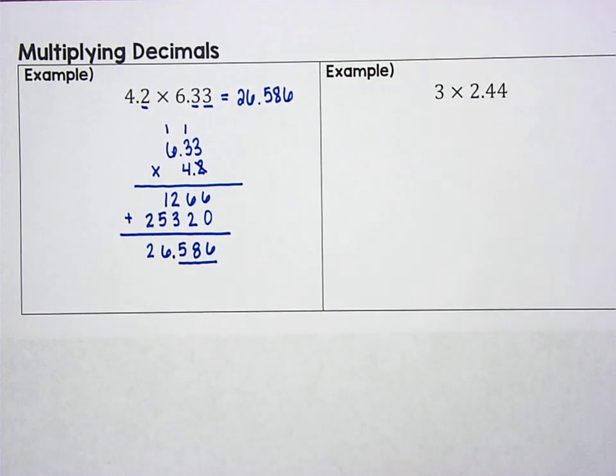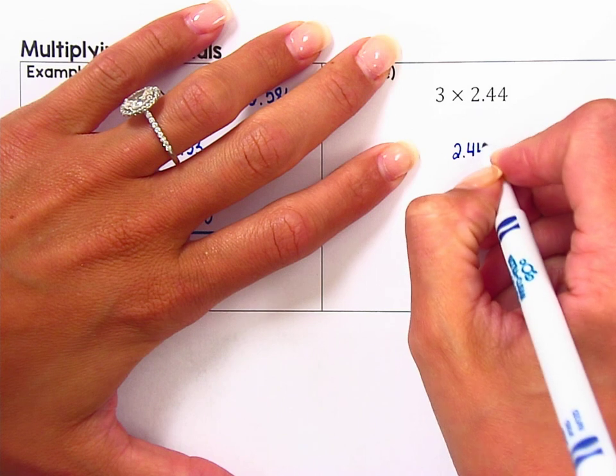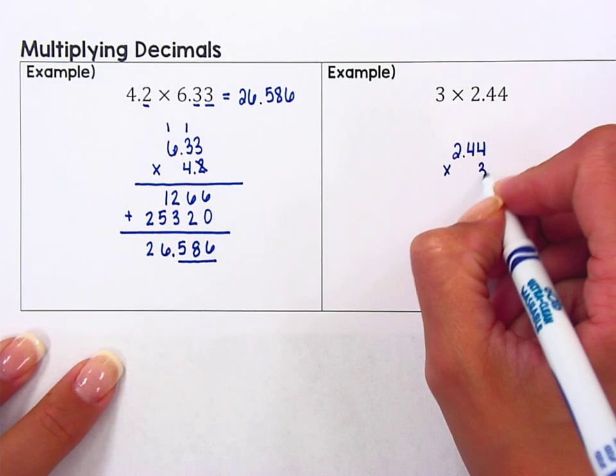Let's try another example. And in this second example, we're multiplying a whole number by a decimal. The same thing applies. We still don't need to worry about lining up our decimal points and I still want to take the number with the most digits and place that on top and multiply by the number with the least amount of digits.